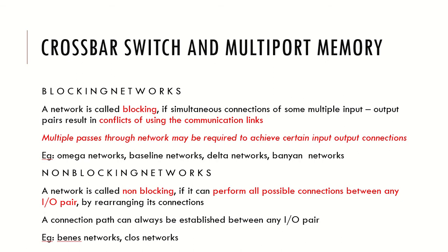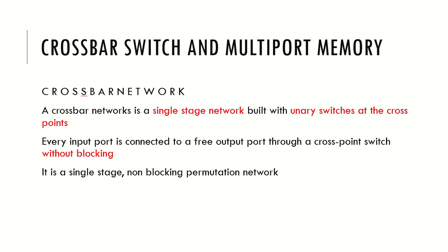The crossbar network is a single-stage network that uses crossbar switches. All switches are unary switches, meaning each satisfies one connection. Each crosspoint between a processing element and memory is implemented using a unary switch — a crossbar switch. Every input port is connected to a free output port through a crosspoint switch without blocking. Therefore, the crossbar network is a single-stage, non-blocking permutation network.